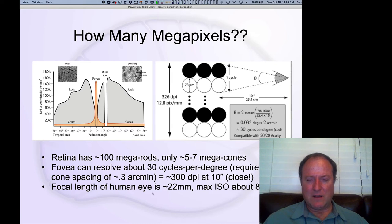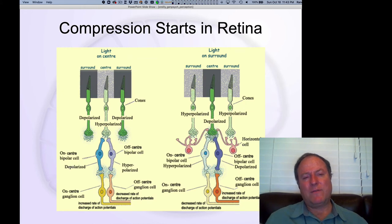If you're a camera buff, there's a bunch of other stuff about the focal length and the ISO, so you can actually think about your visual system in the same kinds of terms as you would a camera. One of the most important features of the retina is that it actually is a very active processing system.